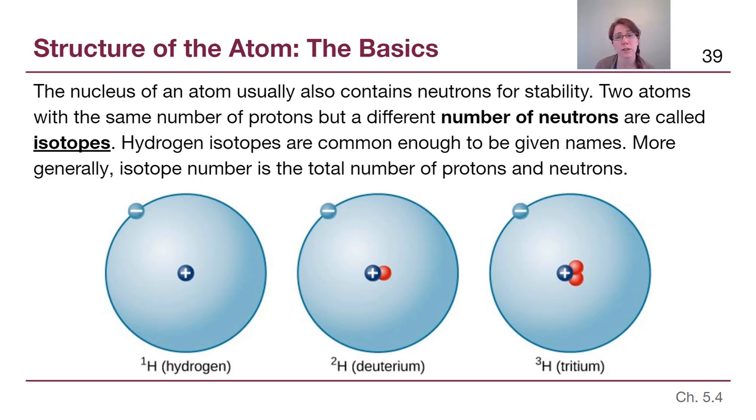Now the number of neutrons actually has an effect on how we think of a particular atom. Two atoms that have the same number of protons would be the same element, but if they have different number of neutrons, then they would be different versions of that element and that different versioning is called isotopes.